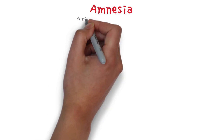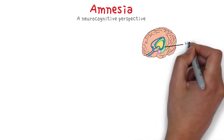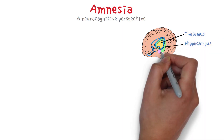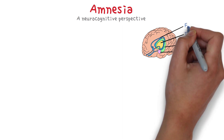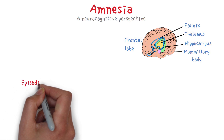In this video we will talk about amnesia from a neurocognitive perspective. Let's start with looking at the brain and the structures that are usually damaged in amnesia. Mainly the structures in the medial temporal lobe are damaged first — we have the hippocampus, thalamus, mammillary body, fornix, and finally the frontal lobe.